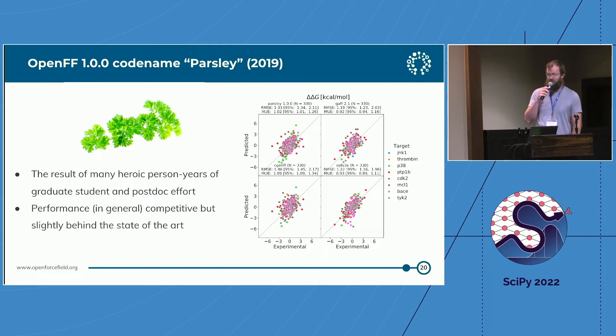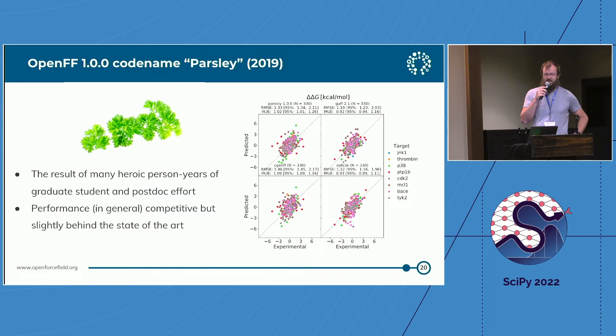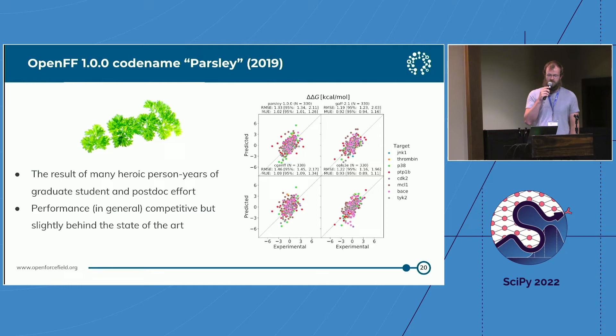The results from this process produced Parsley. Benchmarking force fields is complex territory, but I think it's accurate to say that performance in general was competitive but a little bit behind the state of the art. Looking at protein-ligand binding energies in the preprint figure, Parsley was just a little bit behind GAF and OPLS3, and a little bit better than CGNFF — so it's competitive.